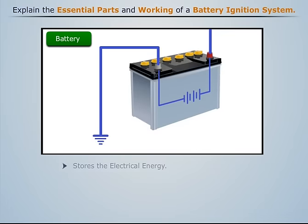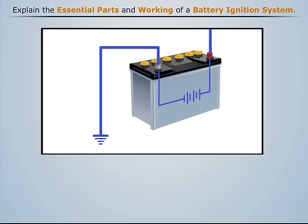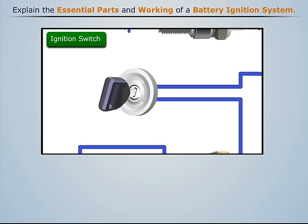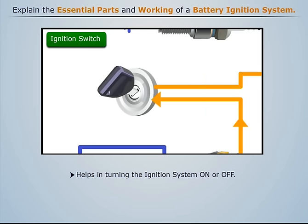A rechargeable lead acid battery is used to provide electrical energy for ignition. This battery is recharged by a dynamo which is driven by the engine. The battery is connected to the primary winding of the ignition coil through an ignition switch, which is used to turn the ignition system on or off.